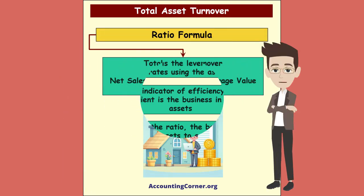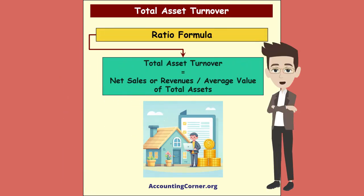Let's check the Total Asset Turnover Ratio calculation formula. It is as follows: Total Asset Turnover equals Net Sales or Revenues divided by the average value of total assets.